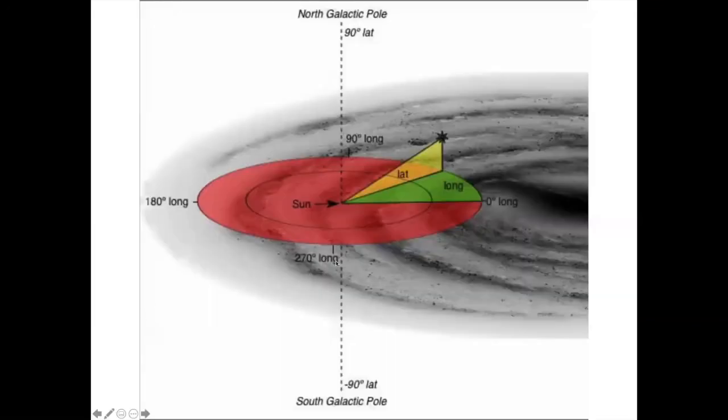You can define based on that galactic longitude and galactic latitude. The galactic longitude is measured with origin at the center of the Milky Way and the galactic latitude towards the galactic pole, the north galactic pole.